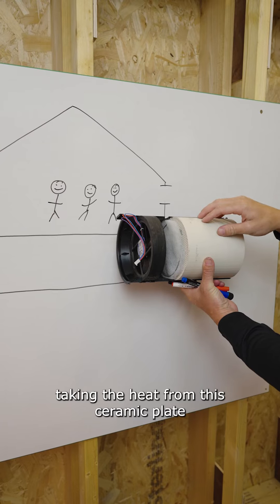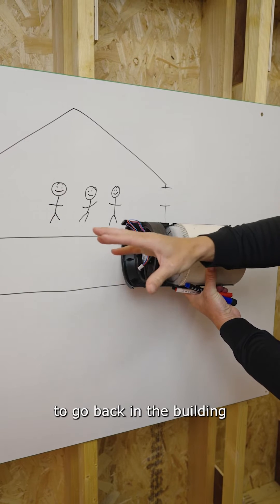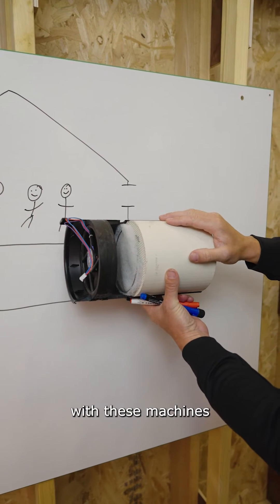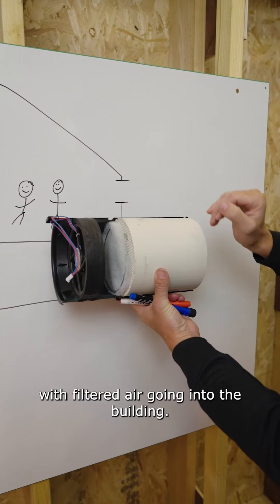Taking the heat from this ceramic plate to go back in the building, meaning we can get anywhere from 80 to 90% efficiency with these machines with filtered air going into the building.